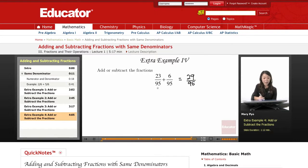Okay, you do not add the denominators together. The denominator stays the same as 95. So 23 over 95 plus 6 over 95 is going to equal 29 over 95.